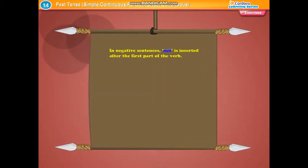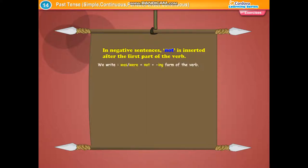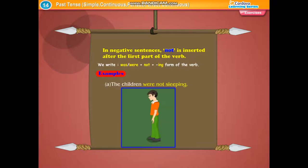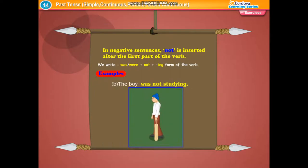In negative sentences of the past continuous tense, 'not' is inserted after the first part of the verb. We write: was/were plus not plus the ing form of the verb. Examples: The children were not sleeping. The boy was not studying.